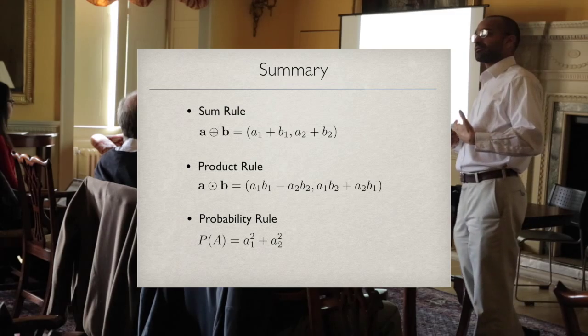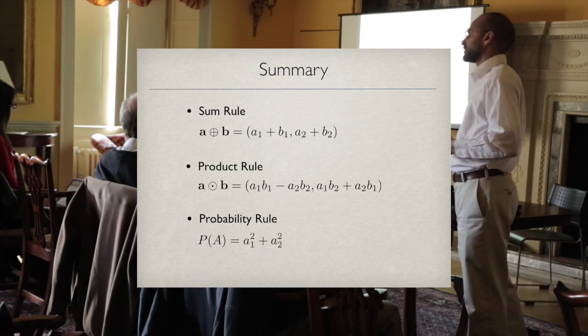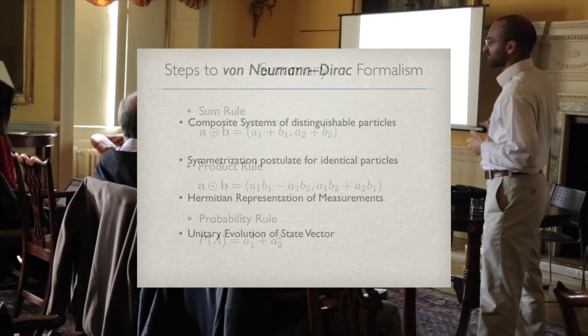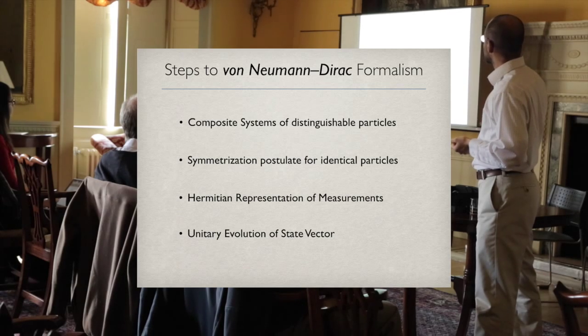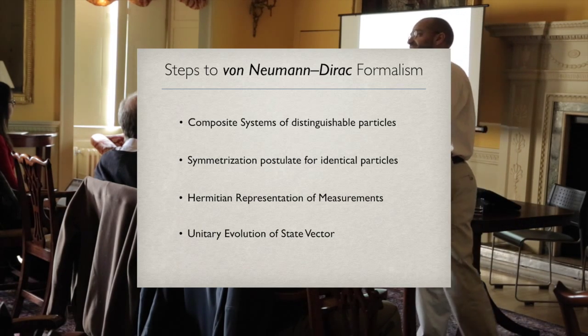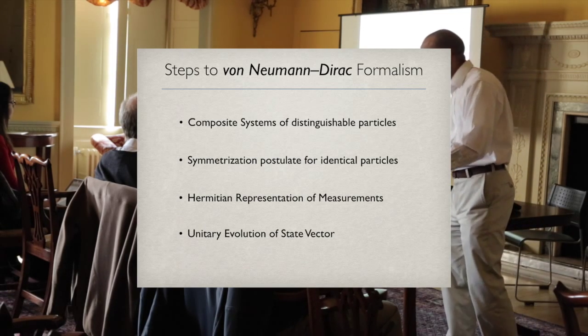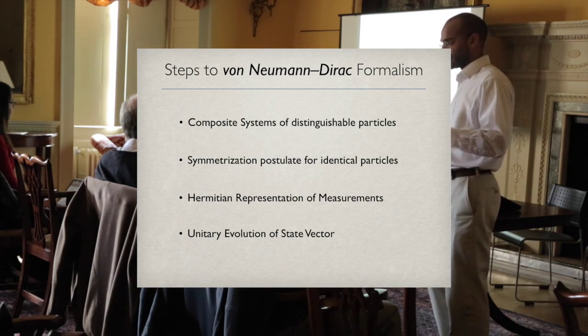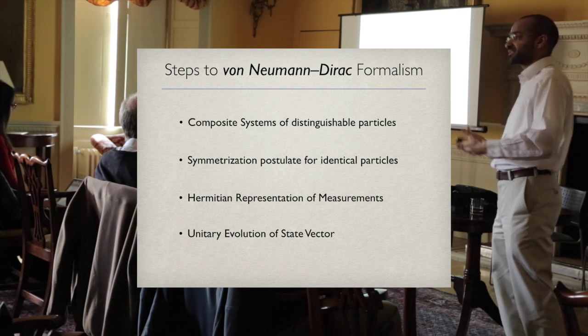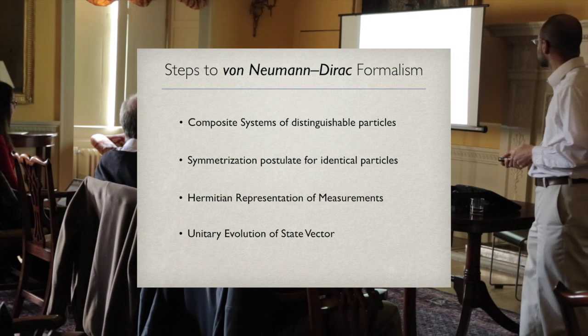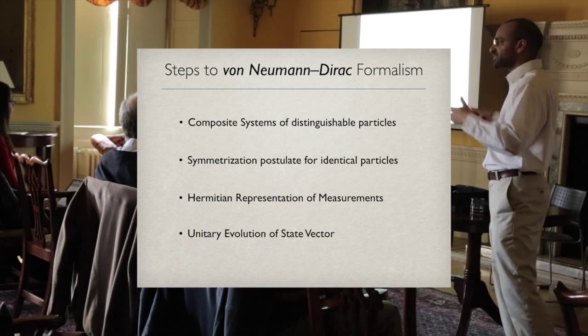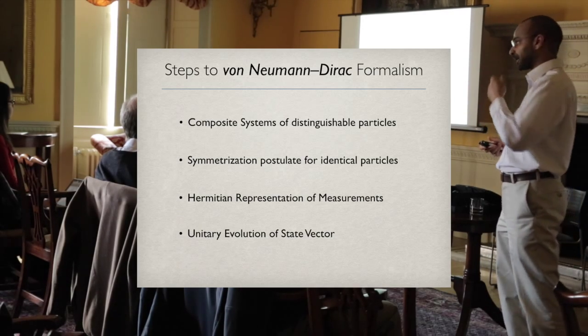From this point, you can derive the rest of the formalism of quantum theory. I've done that in a series of following papers. You can work out how composite systems and distinguishable systems behave. You can work out how identical particles behave and show that fermions and bosons are the only two possible ways that an assembly of identical particles can behave. You can derive the state formalism of quantum theory, all in a systematic way.